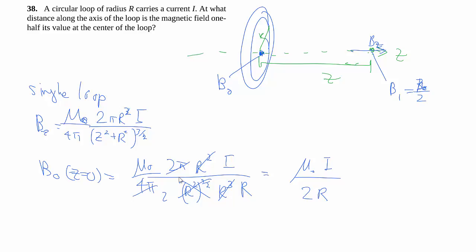That tells us B1 must be exactly half of that, so instead of 2 we have over 4r. So it's our job to relate B1, which has some unknown z, and equate it to this value.